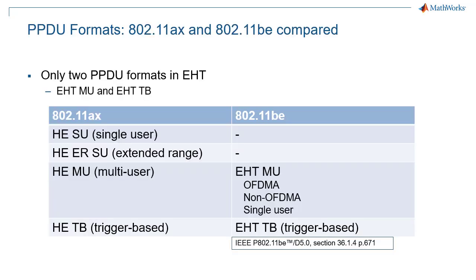We covered the four different formats in HE in a previous episode of our series Wireless LAN Explained. EHT only has two PPDU formats: the multi-user format, which also supports single-user transmission, and the trigger-based format.